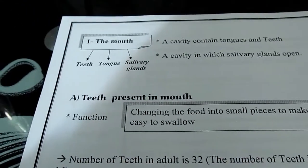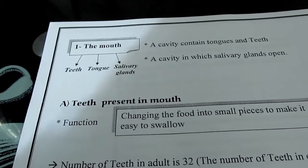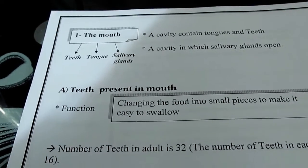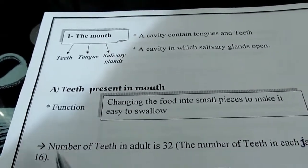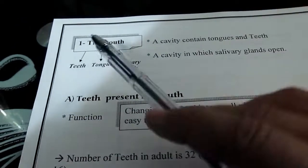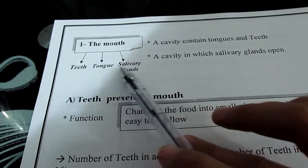Firstly, we discuss the mouth. The mouth contains what? Teeth, tongue, and salivary glands. Again, the mouth contains what? Teeth, tongue, and salivary glands.